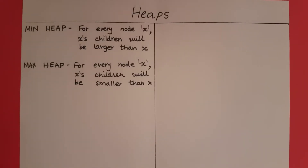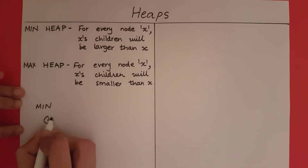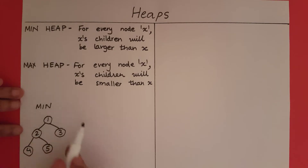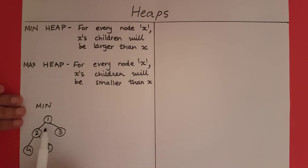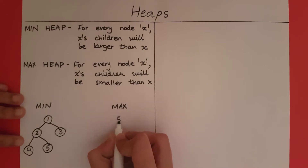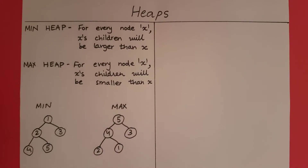So let's give an example of a min heap and a max heap. This is an example of a min heap. In this tree, every node has children that are going to be larger in value than that node. This is an example of a max heap. In a max heap, every node is going to have children that are going to be smaller in value than that node.